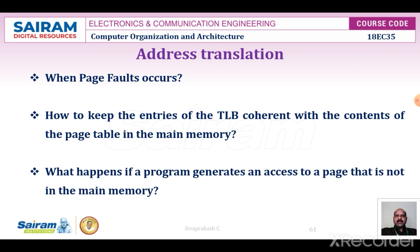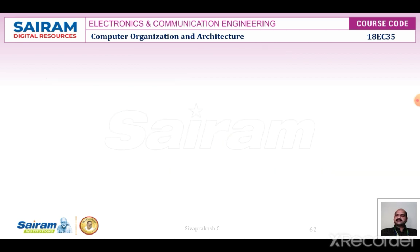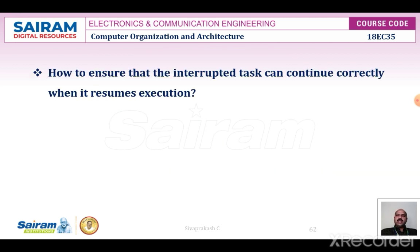Once the page is copied, control is written back to the task where it was interrupted. Servicing a page fault requires transferring the requested page from secondary storage to main memory, which may incur a long delay. While the page is being transferred, the OS may suspend the execution of the task that caused the page fault and begin execution of another task whose pages are already in main memory, enabling efficient use of the processor.